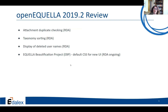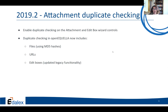2019.2 included the duplicate checking for attachments, taxonomy sorting, displaying deleted usernames, and it was our first run at the Aquila beautification project. The duplicate checking — we already had it on edit boxes, but we extended it to attachments.